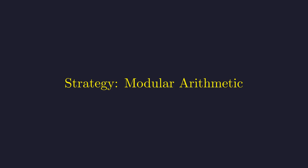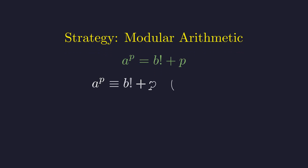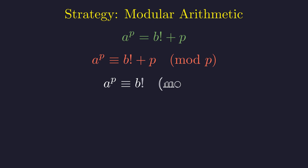An equation with a prime number is a strong signal to use modular arithmetic. Let's analyze this equation modulo P. We start with our original equation. Our goal is to see how each side behaves when we divide by P and look at the remainder. Any multiple of P is congruent to 0 modulo P, so this P term simplifies nicely. This simplifies our congruence to A to the power P is congruent to B factorial modulo P.